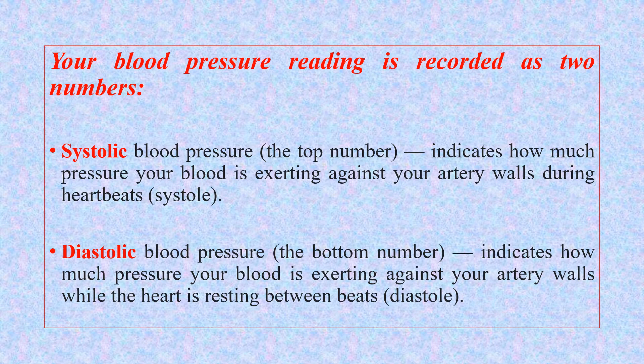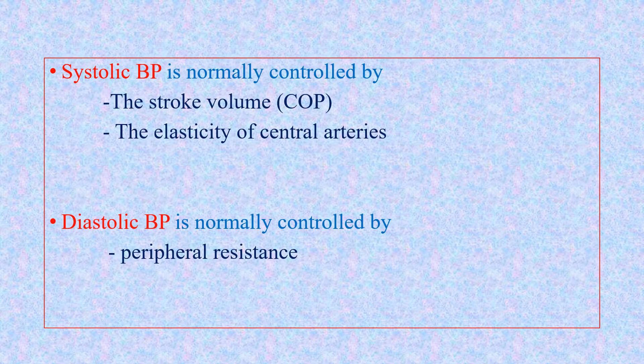We write them together: systolic over diastolic — for example 120/80 or 130/90 — as we know from physiology. The systolic blood pressure is normally controlled by the stroke volume, which is part of the cardiac output. Cardiac output equals stroke volume multiplied by heart rate. Stroke volume is the amount of blood ejected by the ventricle per beat, plus the elasticity of the central arteries. The diastolic blood pressure is controlled by peripheral resistance.